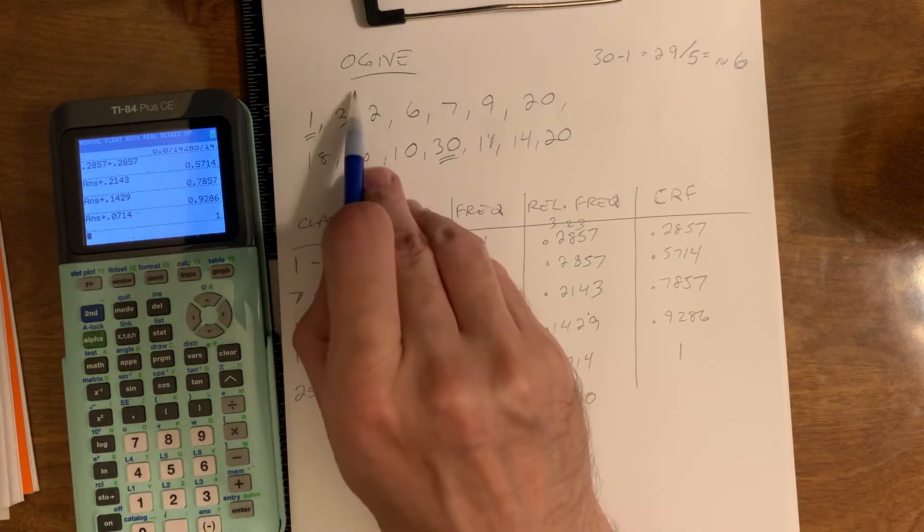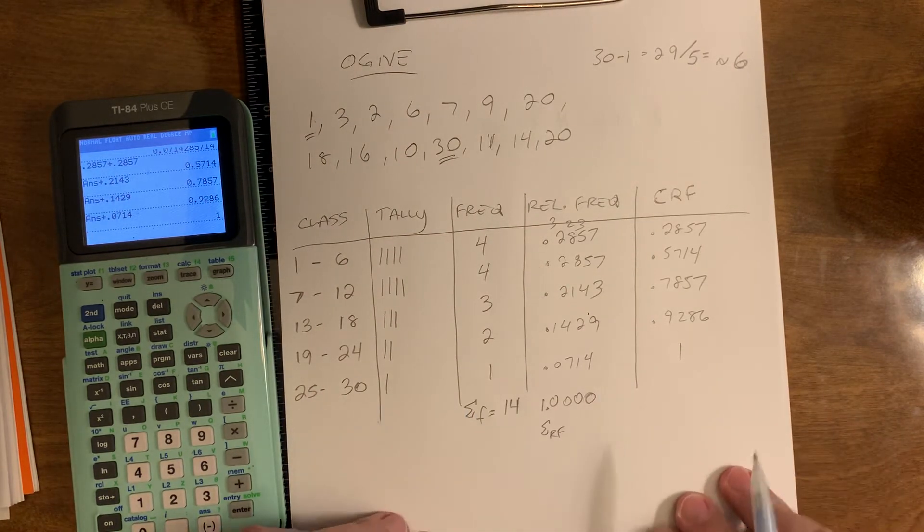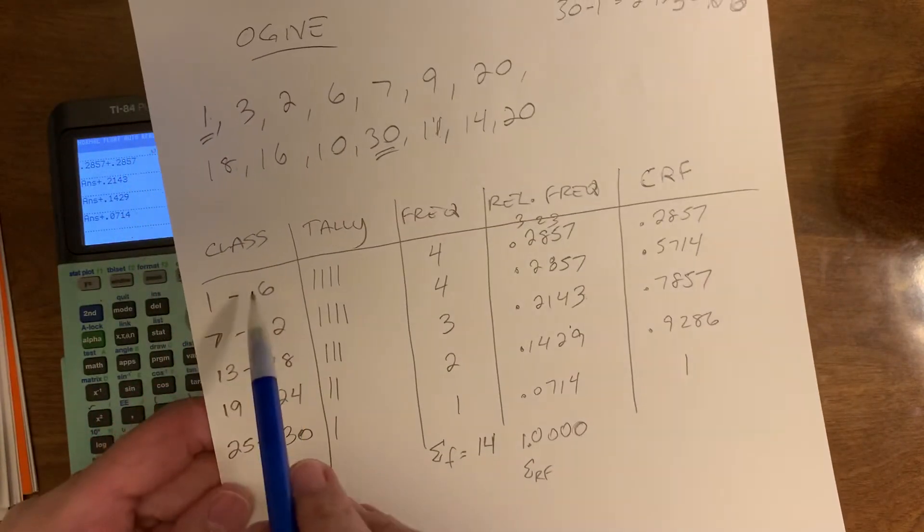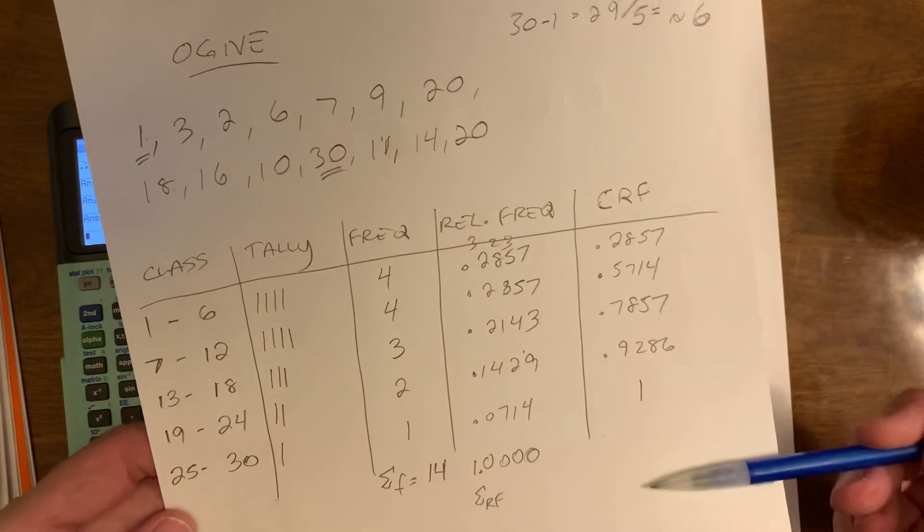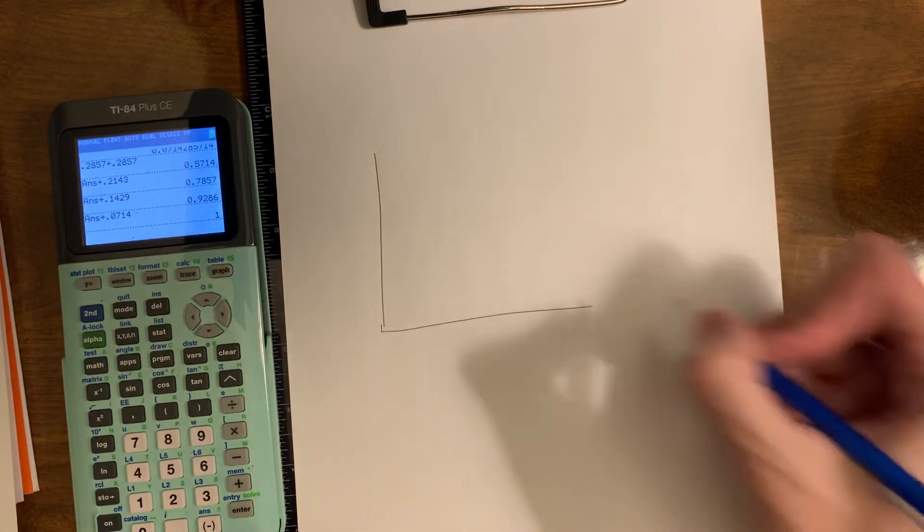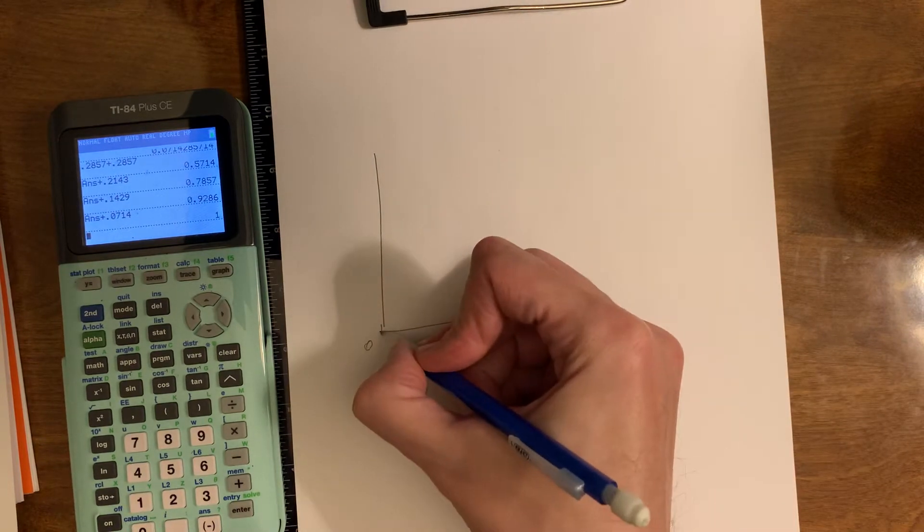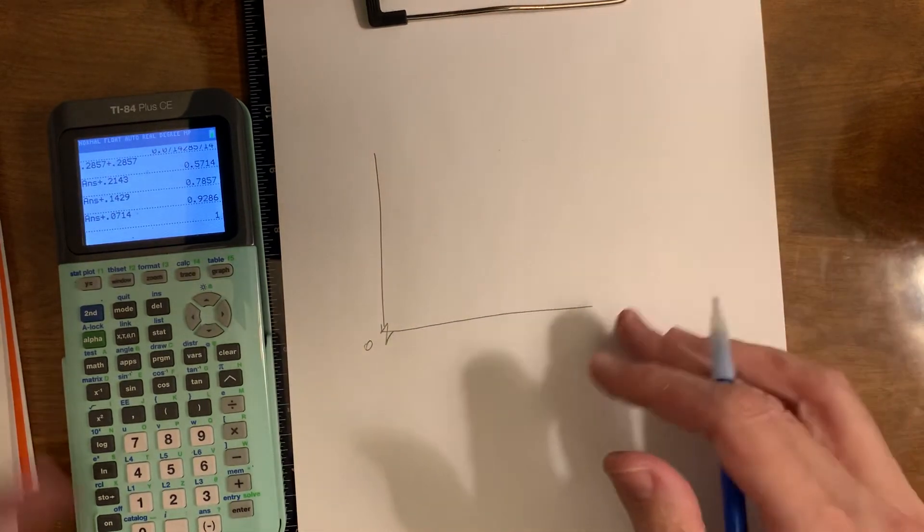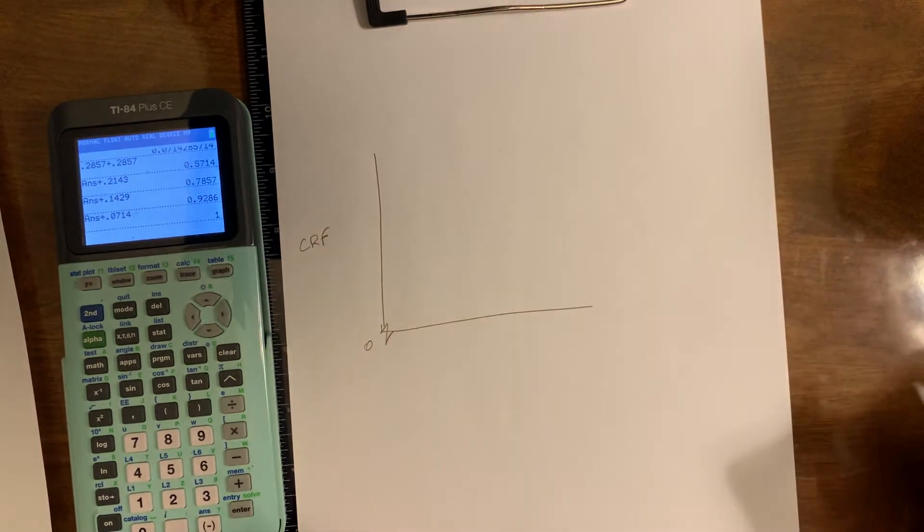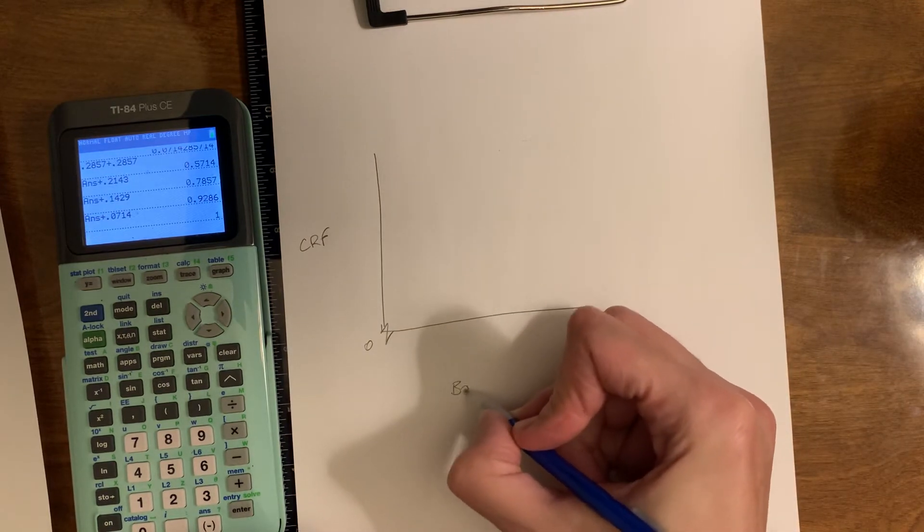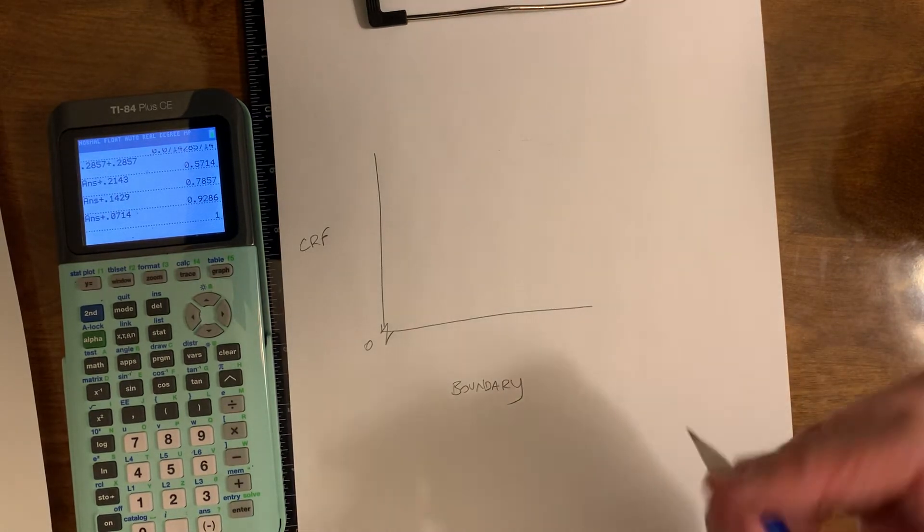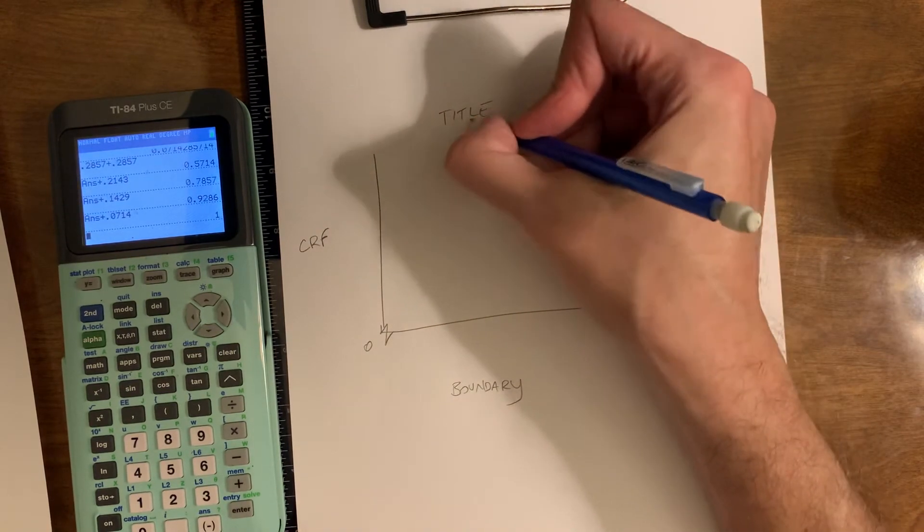So this is ideal. We've added everything. It's all correct. We have what we need to make what we're going to call an ogive. Again, it's spelled O-G-I-V-E, pronounced ogive. So how do we make an ogive? Well, we're going to make a graph that uses the class and the cumulative relative frequency.